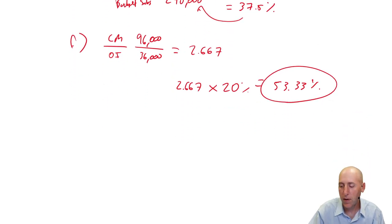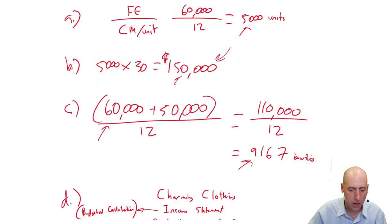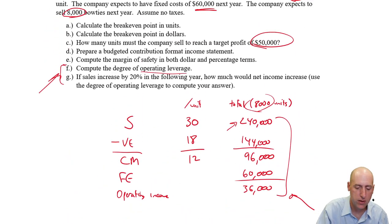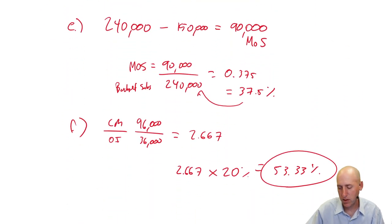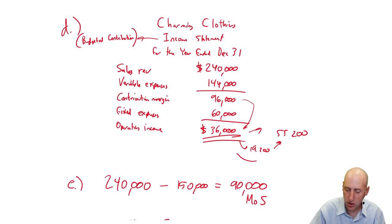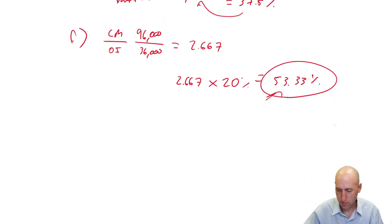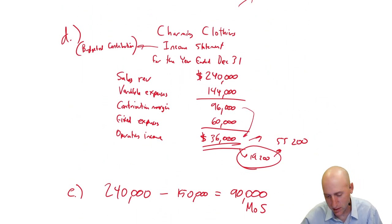An increase of 53.33%. This question wasn't very well framed. It could have said, you know, sales increase by 20%. By what percentage would net income increase? That would be sort of a clearer version of the question, in which case we would answer 53%. But by how much, I think the correct answer is $19,200. It's going up by 53%. But 53% of what it was is $36,000 times 53%. It's $19,200. Let's prove this.